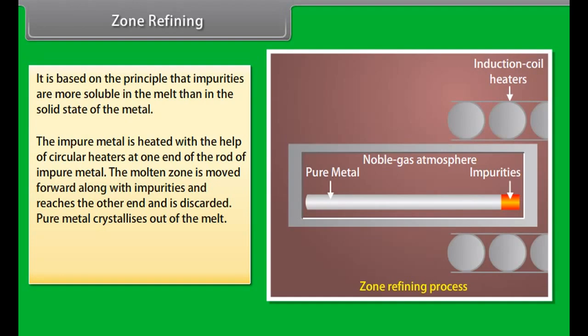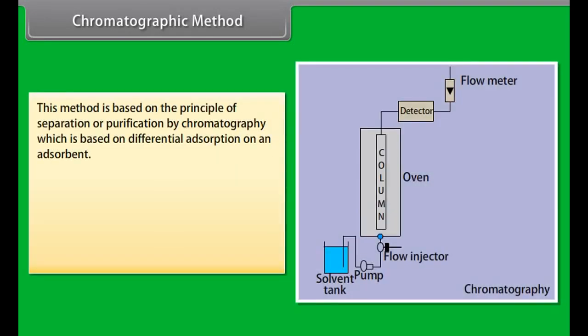Refining. A metal extracted is usually contaminated with some impurity. For obtaining metals of high purity, several techniques are used depending upon the differences in properties of the metal and the impurity.